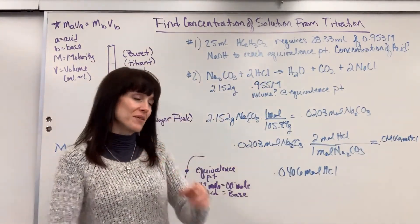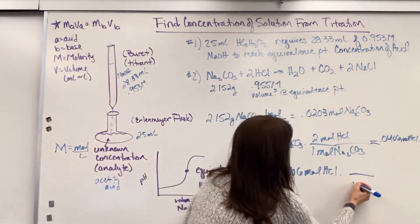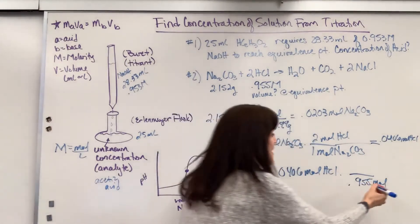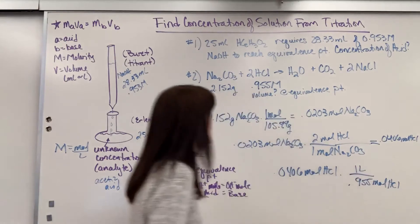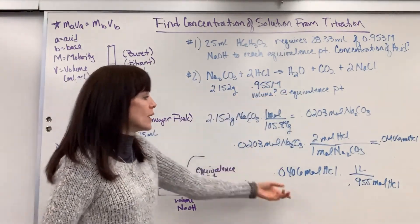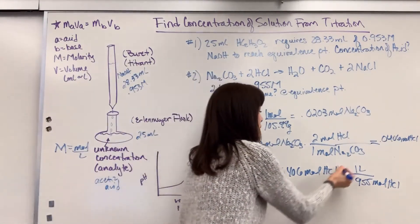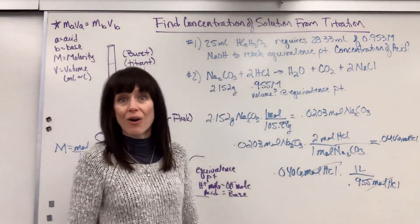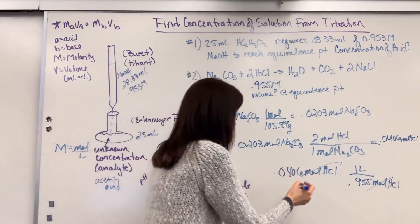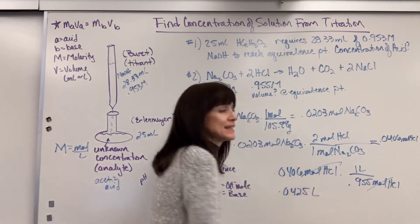I want to know volume. So if I just take this molarity, I want to get rid of moles. So I do 0.955 moles of HCl are in one liter. That's by definition. That's what that big M means. That many moles per one liter. Now, why did I put the 0.955 mole on the bottom? It's so moles cancels out. So now when I do 0.0406 divided by the 0.955, we are going to get 0.0425 liters.